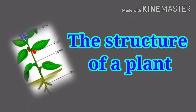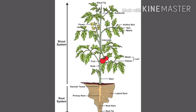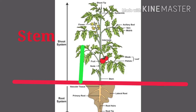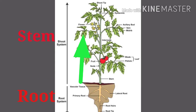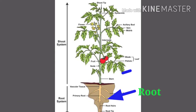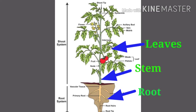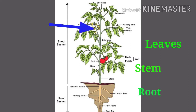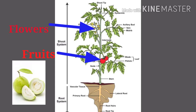The structure of a plant can generally be divided into two parts: the stem, which grows above the ground, and the root, which grows below the ground surface. The root, stem, and leaves are the main parts of plants. From time to time, plants bear flowers for reproduction. Flowers are transformed into fruits, which have seeds, and seeds give rise to new plants.